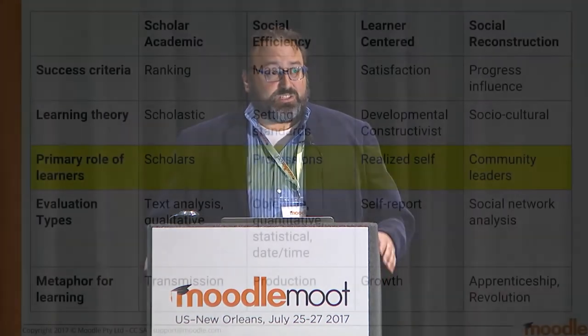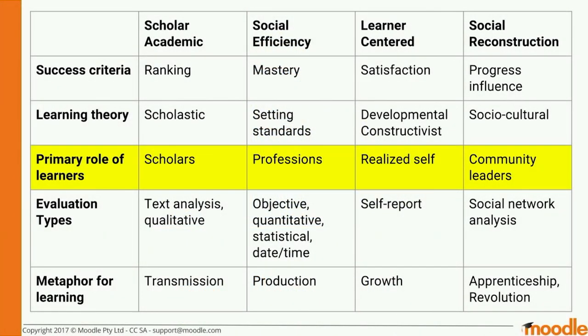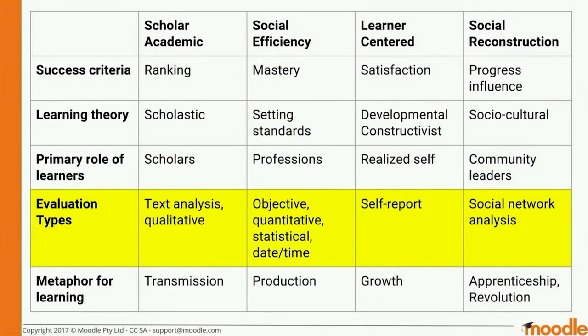There's also the primary role of learners. Were you being encouraged as a scholar your whole life? Were you being groomed as a professional, as someone self-realized, or as a community leader? Evaluation types differ too: traditional schools use dissertations and long written passages with qualitative feedback; social efficiency leans toward standardized, quantitative measures with clear boundaries; learner-centered is more self-reporting; and social reconstruction asks what influence you've made.